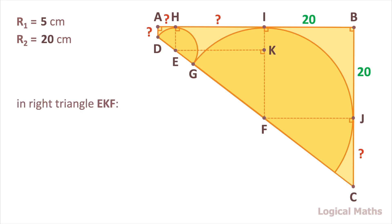In right triangle EKF, KF equals to the difference of IF and IK and it equals to the difference of R2 and R1. Substituting the values, we get 20 minus 5, which equals to 15.